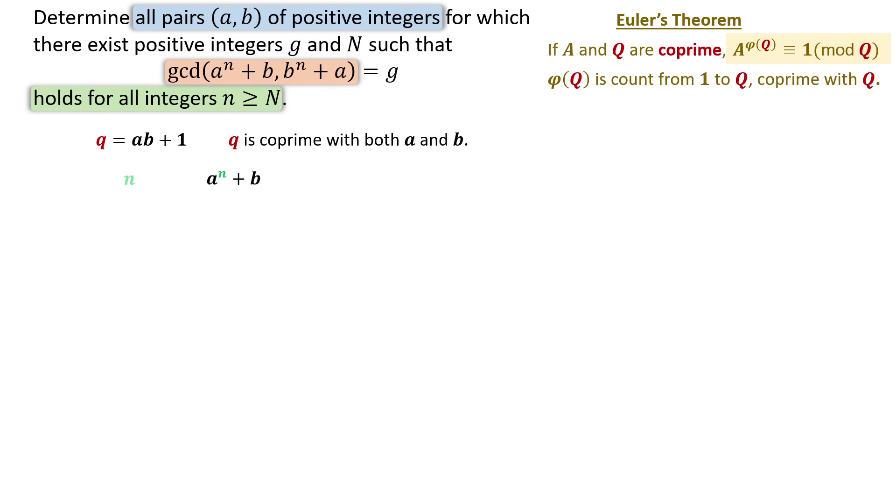For the first expression, as n increases, at some point, the expression becomes a to the phi q plus b. A and q are co-prime, a to the phi q mod q is 1. For n equals phi q minus 1, the expression is a to the phi q minus 1 plus b. We manipulate this expression to show it is divisible by q. Under mod q, a to the phi q is 1, so multiplying a to the phi q by b doesn't change the value. Taking a to the phi q minus 1 as common factor, we get 1 plus a b mod q. Since we assume q equal a b plus 1, the expression is divisible by q when n equals phi q minus 1.